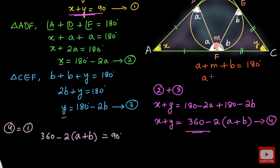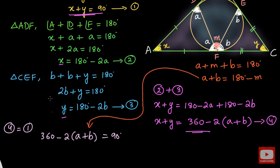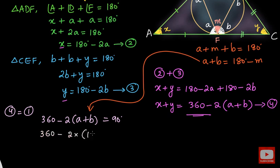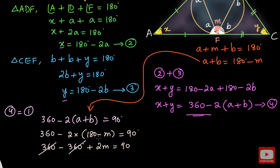So A plus B equals 180 minus M. Substituting into our equation: 360 minus 2 times (180 minus M) equals 90. Opening the brackets: 360 minus 360 plus 2M equals 90. The 360s cancel out, leaving 2M equals 90 degrees. Therefore M equals 90 divided by 2, which is 45 degrees.